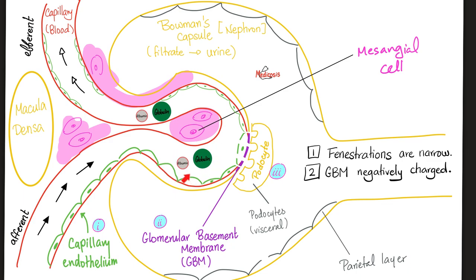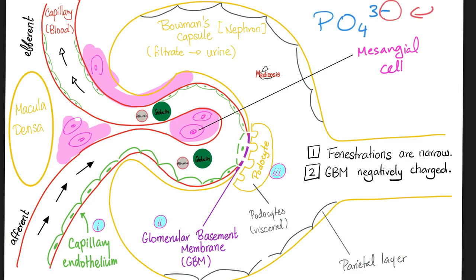But how come proteins — albumin and globulin — are not filtered in a normal kidney? There are two reasons. Reason number one: the fenestrations are so narrow, and the proteins are so big, so they can't pass. Number two: proteins are negatively charged. Moreover, the glomerular basement membrane is a phospholipid membrane. The phosphate group carries a negative charge. So since the phosphate in the membrane is negative and the proteins are negative, they repel each other. That's why a normal kidney will not let proteins into the urine.